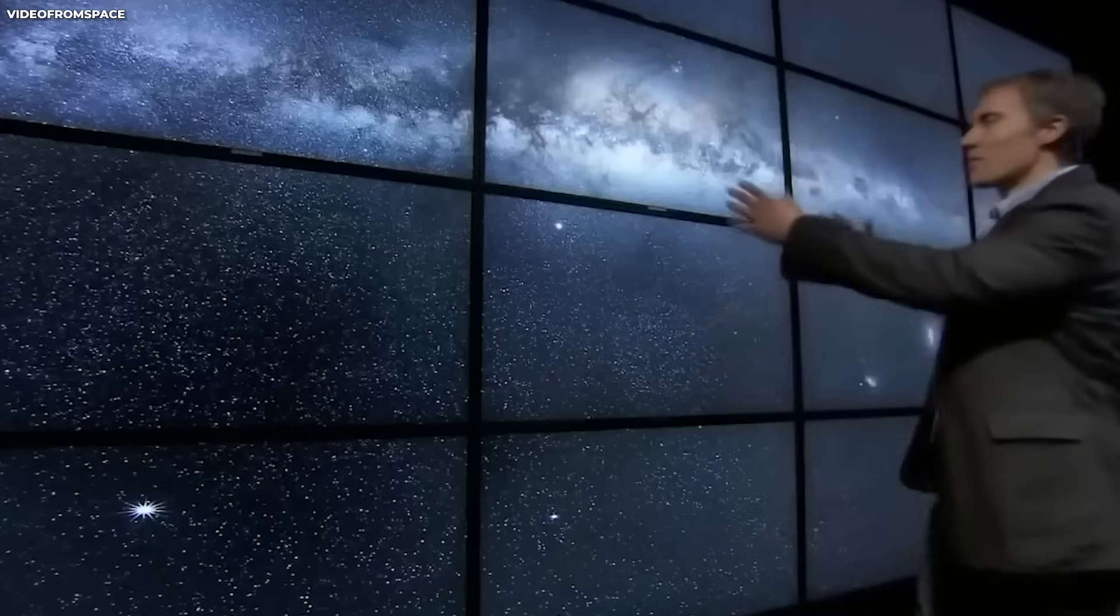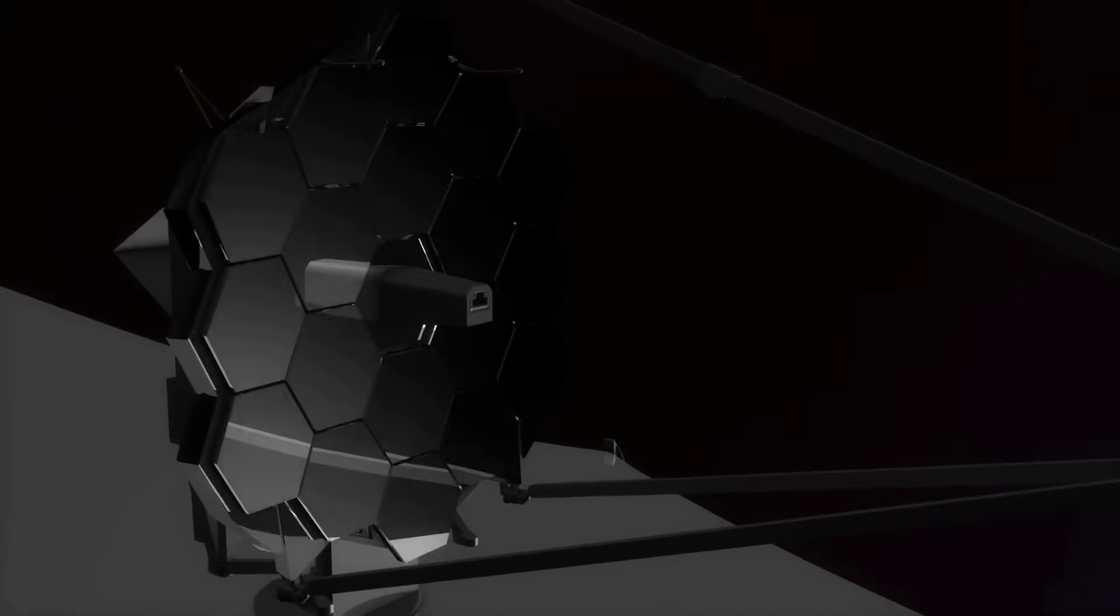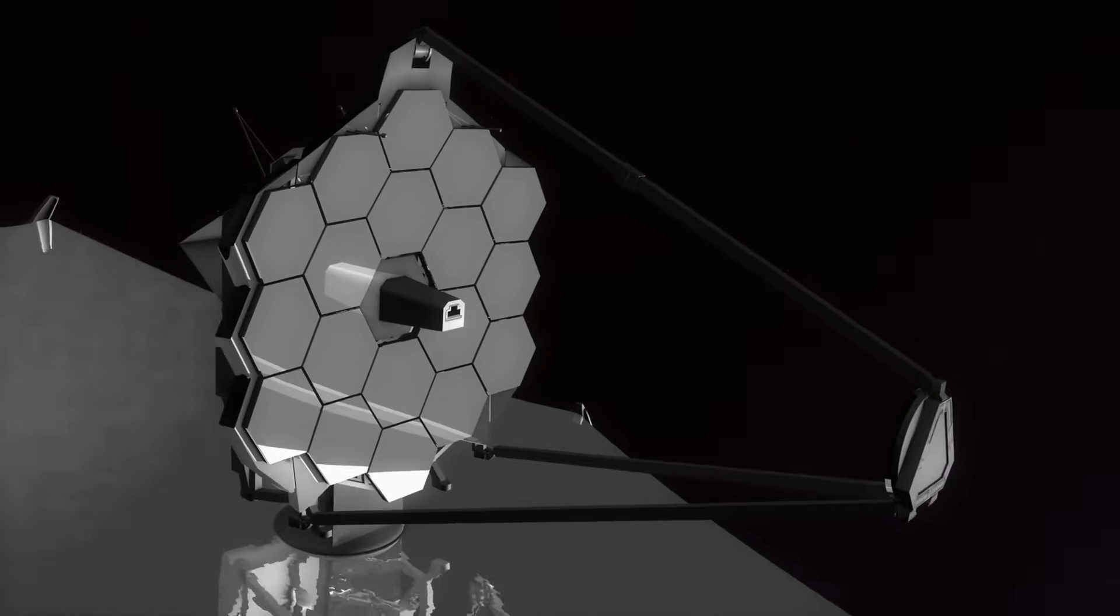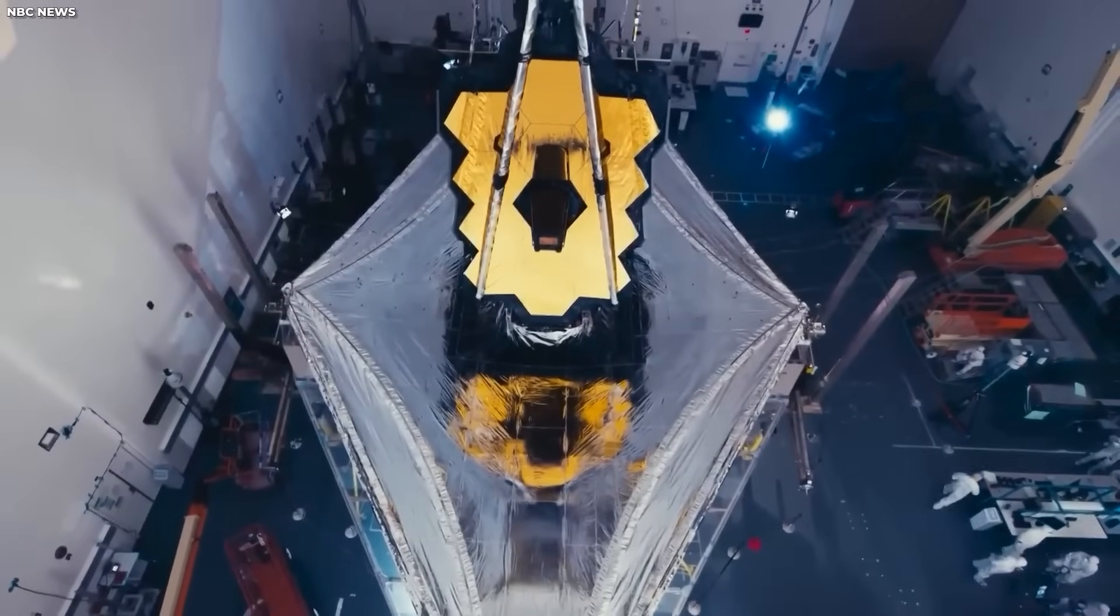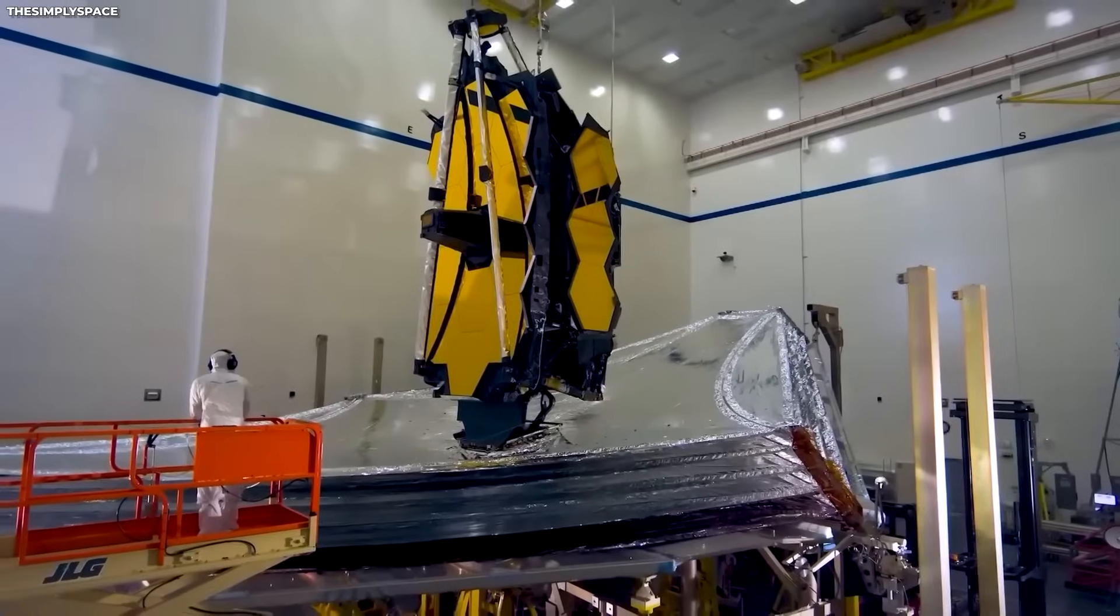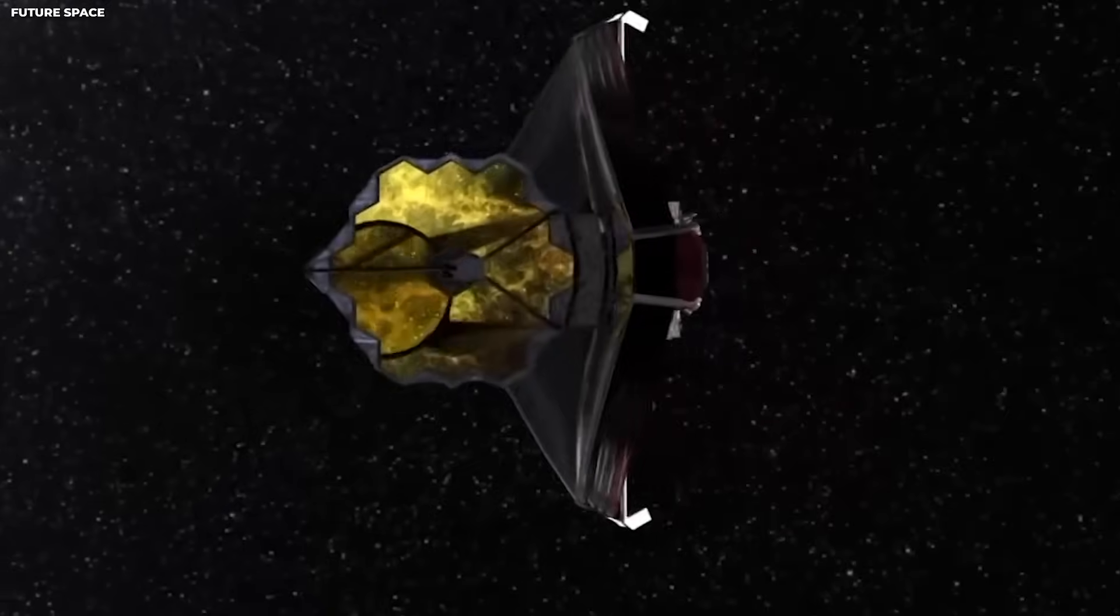James Webb Telescope has captured the most terrifying image ever seen in history. And together, we will explore its implications for our planet and solar system. But first, let us understand the unparalleled uniqueness of this remarkable telescope. The James Webb Telescope, JWST, is no ordinary telescope. It stands as the largest and most advanced space telescope ever constructed.